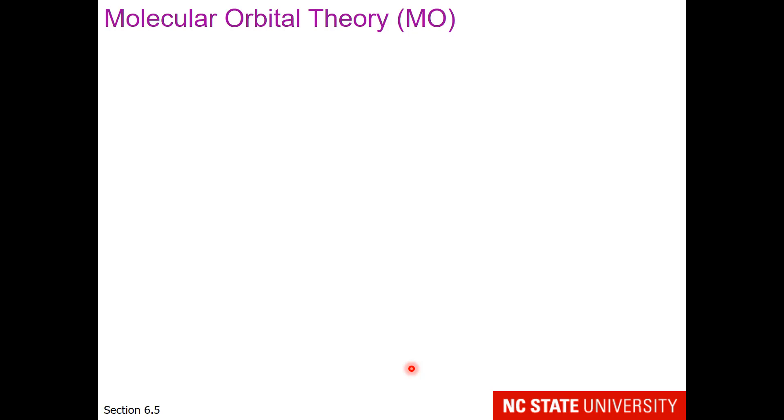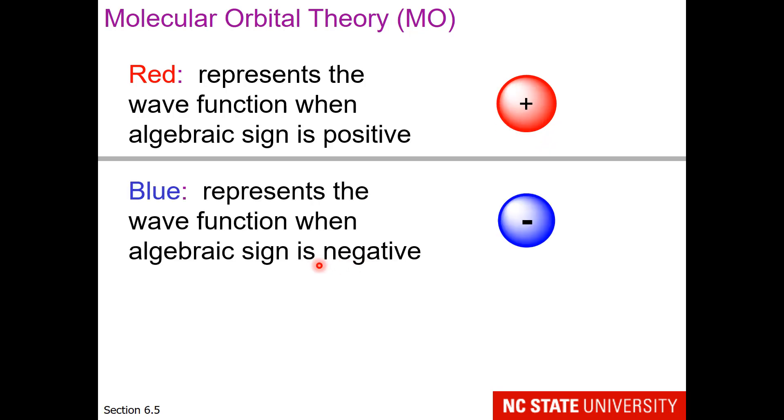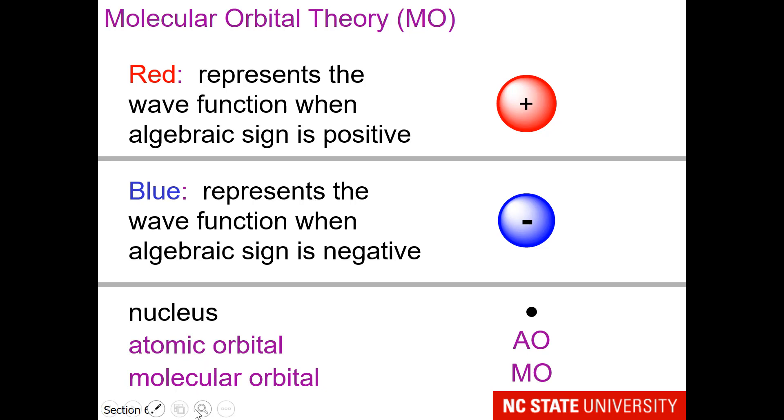For MO theory, there's some abbreviations on the slides. Red represents the wave function when the algebraic sign is positive. Blue represents when the wave function's algebraic sign is negative. And just like NC State and Duke are not typically friends, red and blue are going to cancel out. If you see a dot, that would be the atom's nucleus. AO is short for atomic orbital, and MO is short for molecular orbital.